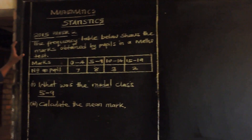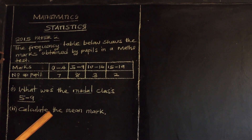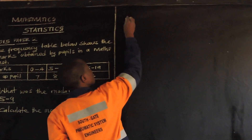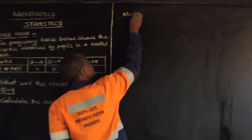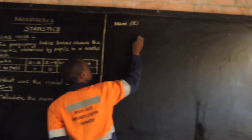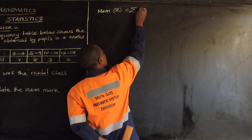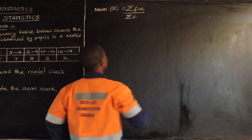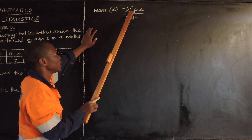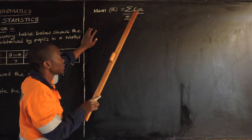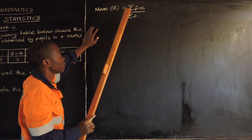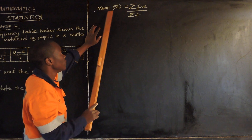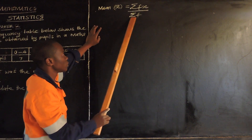The next question says: calculate the mean mark. So how do you find the mean? The mean, denoted by x-bar, is equal to the summation of frequency multiplied by the midpoint, divided by the summation of the frequency. This is the formula we use. The symbol represents summation, F is the frequency, and x is the midpoint.